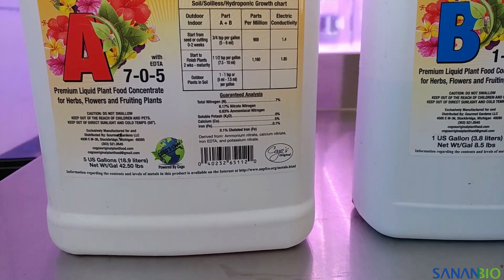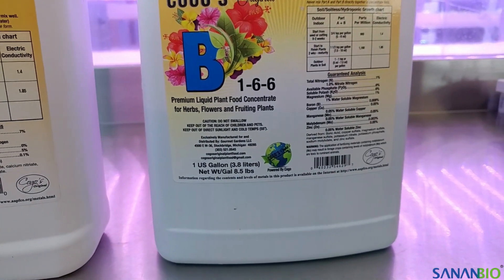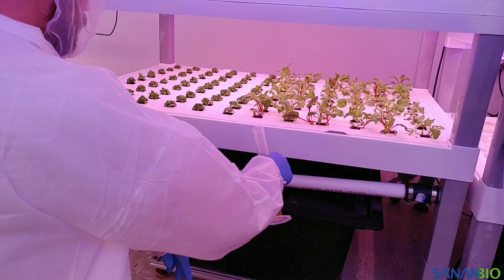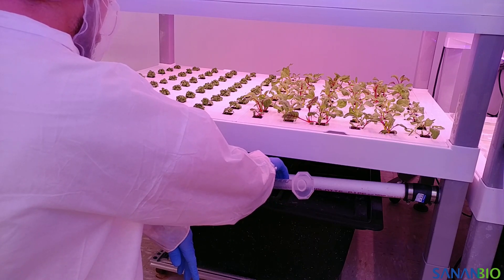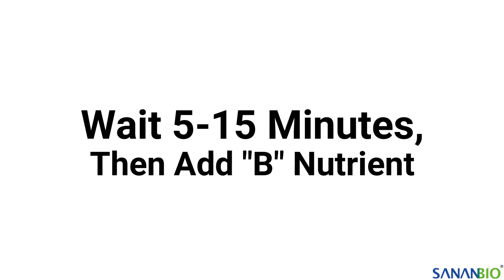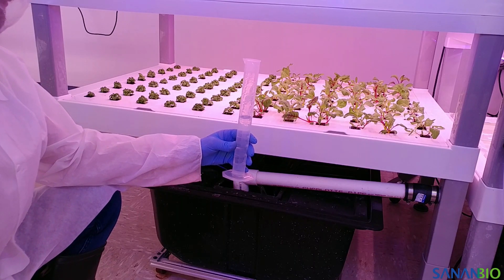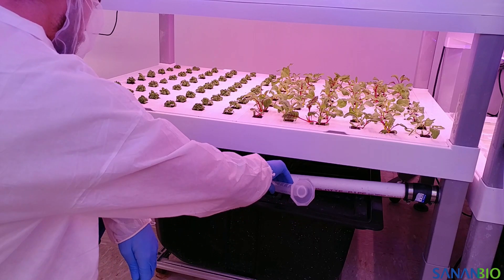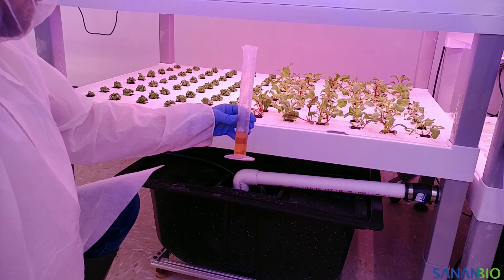Nutrients are often sold in sets that include A and B compounds. When adding nutrient to your water, we recommend adding the A nutrient and waiting 5 to 15 minutes before adding the B nutrient. This time period allows the nutrients to sufficiently dissolve into the water and prevent the compounds from bonding, thus becoming unavailable to the plants. It is best to add nutrients to the water before adjusting the pH, as some nutrient formulations can alter the pH of your water and adding acids or bases before the nutrients are fully dissolved can increase the likelihood of nutrient loss through dissolution.